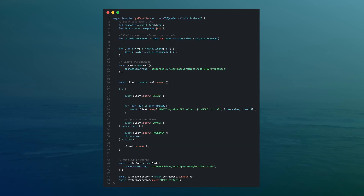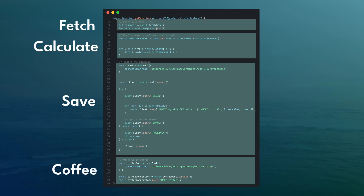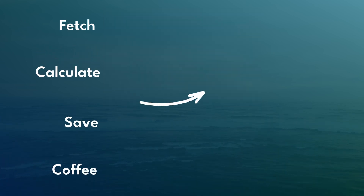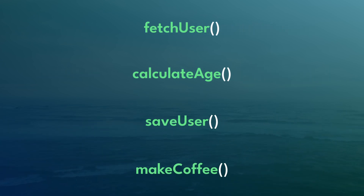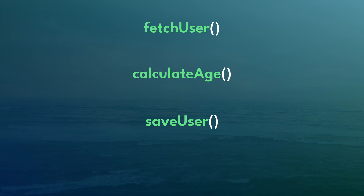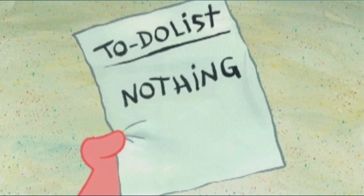Fear not, for there is hope. First, we're going to identify all the responsibilities that this function has. Then we're going to take those responsibilities and break them into smaller functions, making sure we name those functions descriptively. If a couple of functions look like they belong together, we'll put them in a class. Lastly, we'll write tests and make sure everything passes. We repeat this process until your god function has minimal responsibilities or is no longer needed.